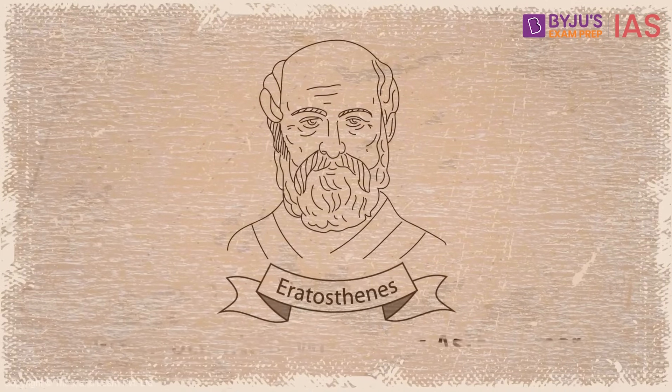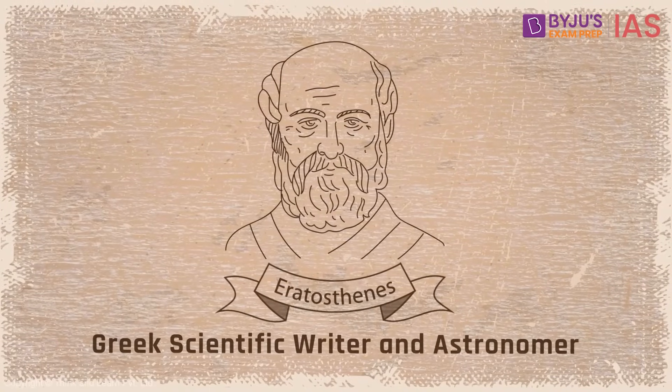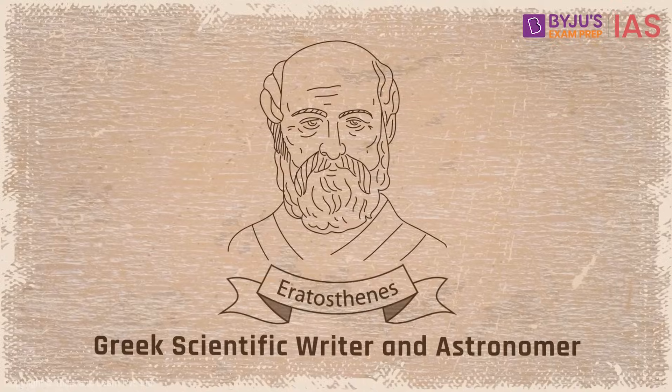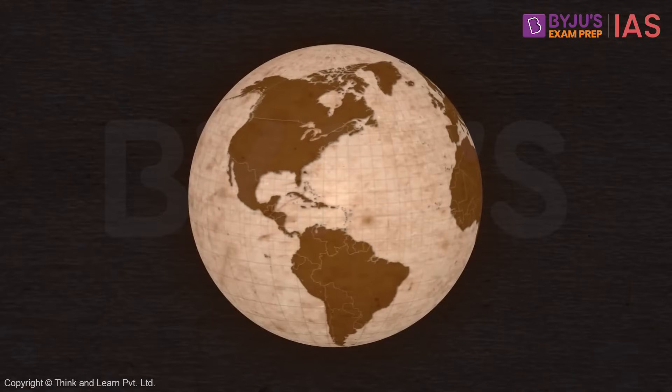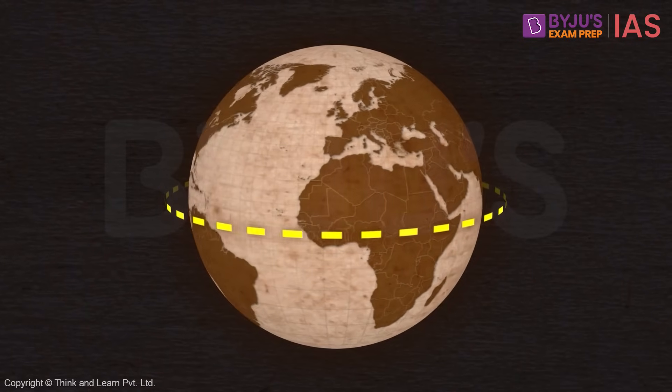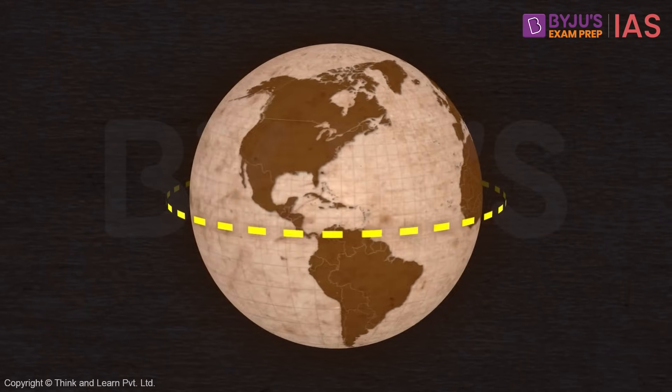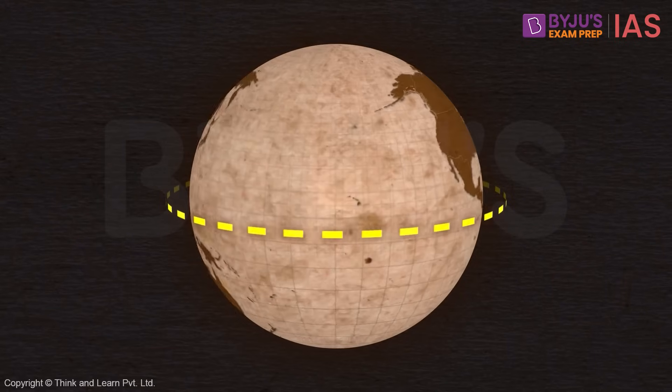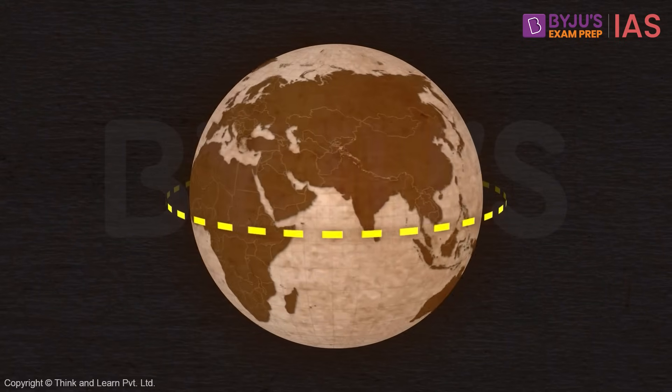Eratosthenes was an ancient Greek scientific writer and astronomer. Some sources claim that he was the first one to estimate the size of the Earth and postulated that the shape of the Earth to be round. How did he do that? Let's find out.